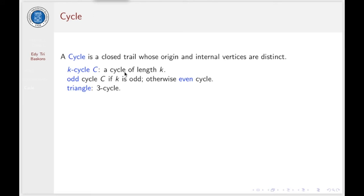Now I recall the definition of cycle. A cycle is a closed trail whose origin and internal vertices are distinct. This is a cycle of length K. If K is odd, we call C an odd cycle. If K is even, we call C an even cycle. For K equals 3, this cycle we call a triangle.